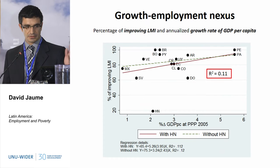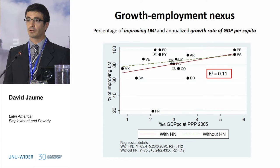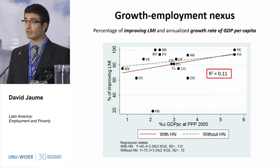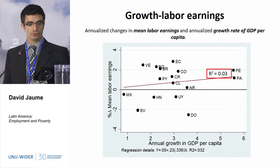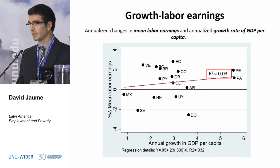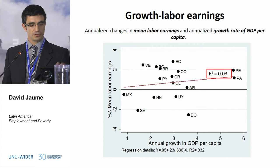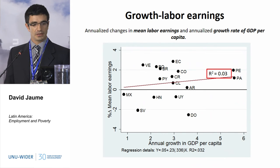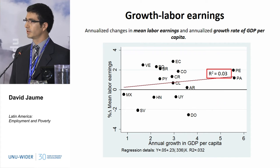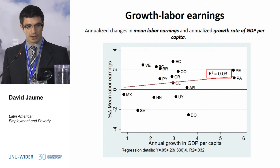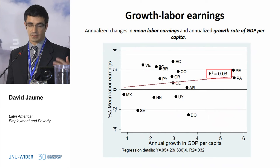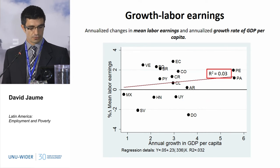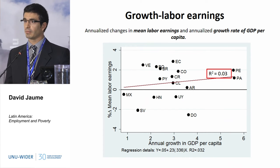This is true for these summary indicators, but also if we look at each one of the labour market indicators one at a time. For example, this is the relationship with mean labour earnings — in this case the R-squared is even lower. But still we have the positive slope and larger heterogeneity in the middle. That's a pattern that is repeated for almost all the labour market indicators.